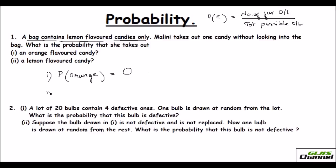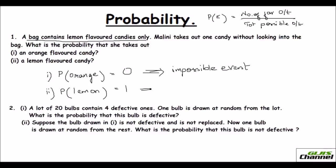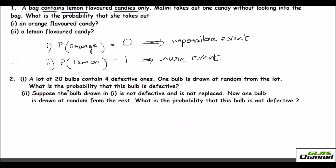The second question asks: what is the probability of getting a lemon flavored candy? Since the bag contains only lemon flavored candies, whichever candy she picks will be a lemon flavored one. So that is a sure event. The probability of getting a lemon candy is 1, since it is a sure event. Zero denotes an impossible event and one denotes a sure event.